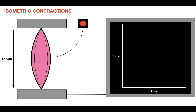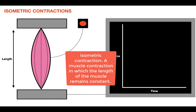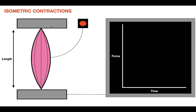Hello everyone, welcome to 10 Minute Physiology. In today's video, I'm going to give you a short explanation as to what isometric contractions are and about what they teach us about the muscle. So let's give it a go. An isometric contraction is a contraction in which the muscle length remains constant. In this experiment, we have a skeletal muscle that is affixed at two ends, and we have an electrode attached to it that is going to pass a stimulus into the muscle, causing it to contract.